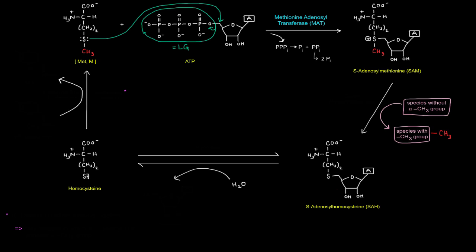Now S-adenosyl methionine, or SAM, acts as a methyl group donor. And when it donates a methyl group, it basically happens like this. We'll start off with SAM and some species that doesn't have a methyl group that needs a methyl group. And so that methyl group requirement will be satisfied by SAM.